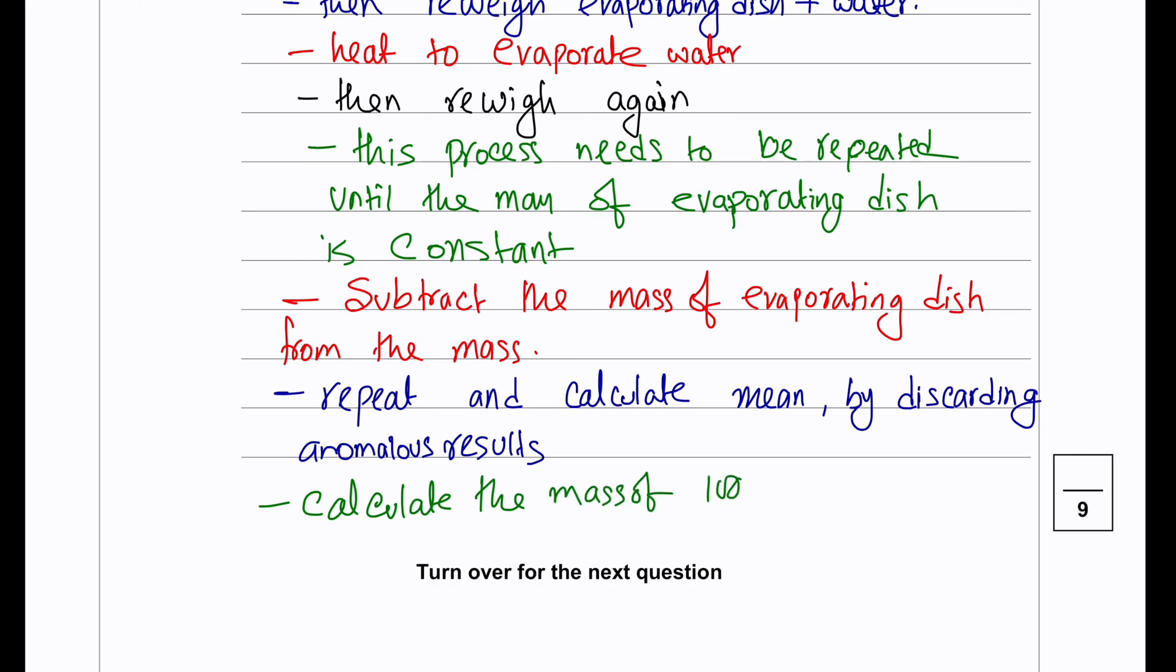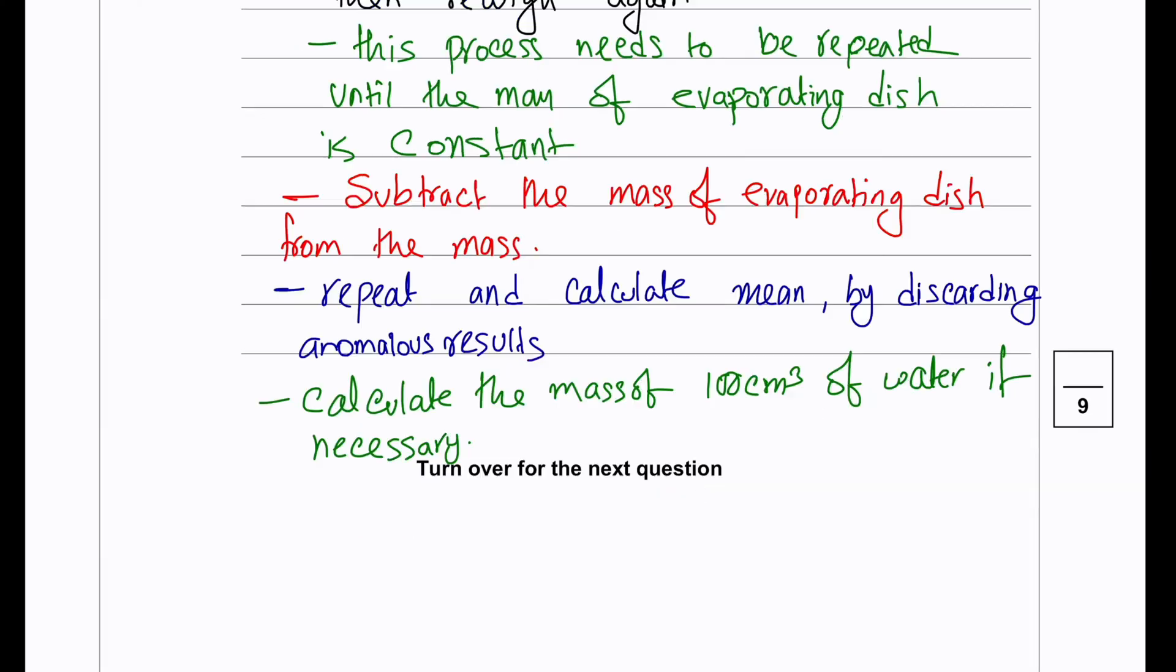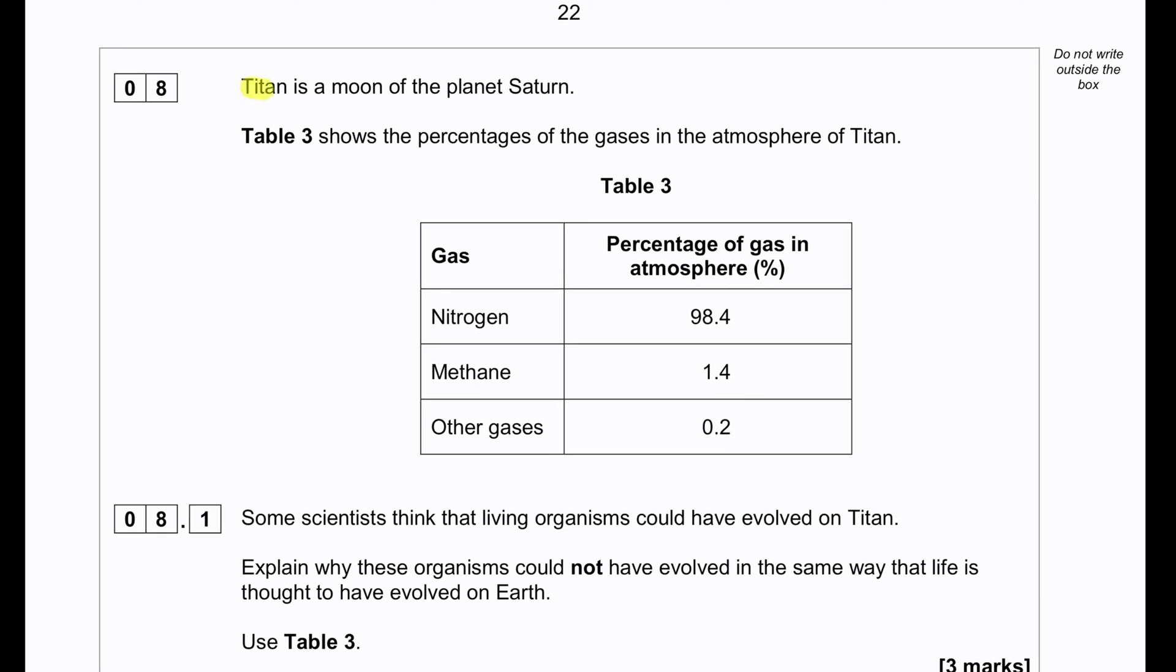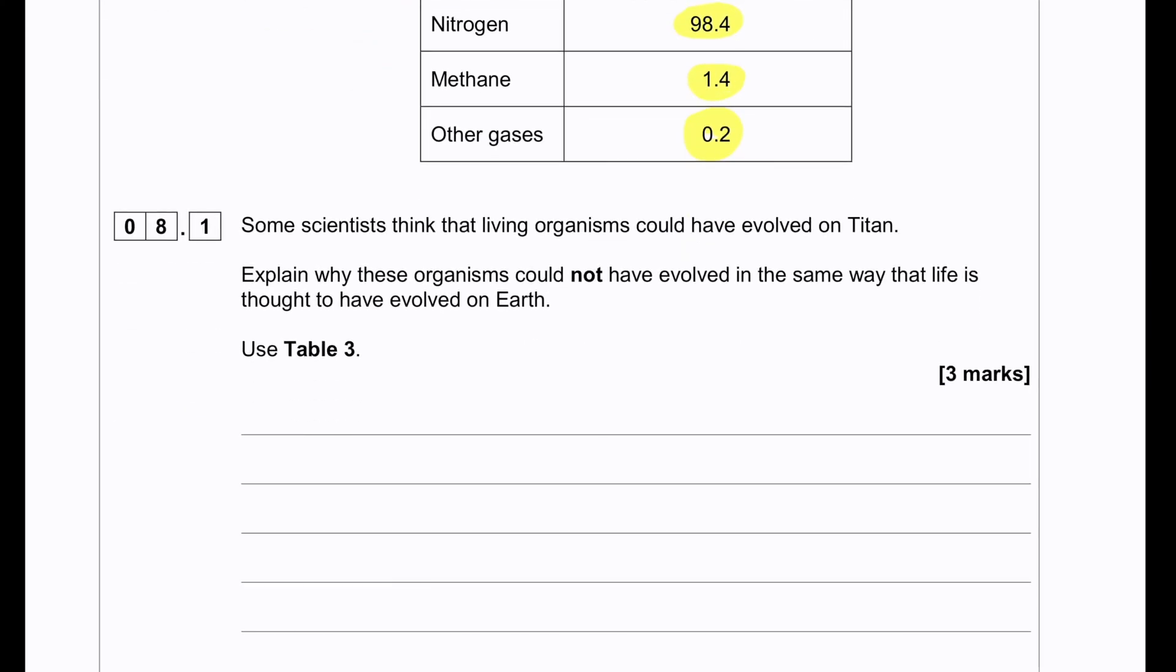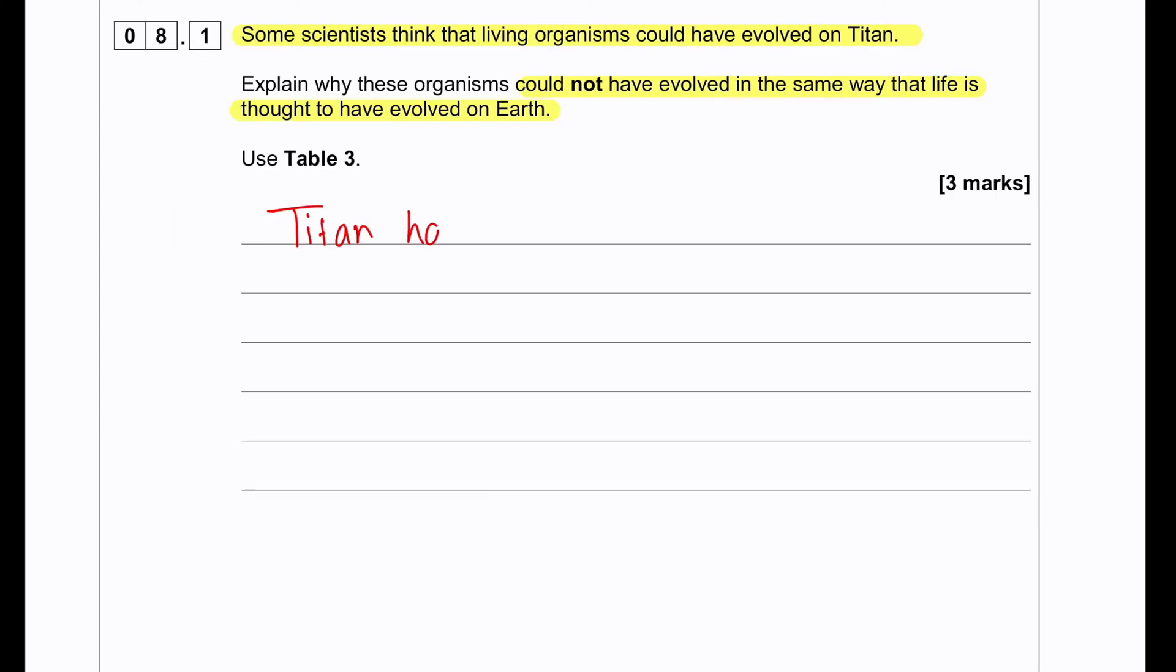Titan is a moon of the planet Saturn. Table 3 shows the percentages of gases present in the atmosphere of Titan: nitrogen 98.4%, 1.4% methane, and 0.2% other gases. Some scientists think that living organisms could have evolved on Titan. Explain why these organisms could not have evolved in the same way life is thought to have evolved on Earth. Titan has very little to no oxygen, so photosynthesis has not occurred on Titan and therefore no carbon dioxide is present. As a result, oxygen-using animals cannot have evolved.